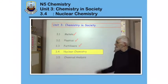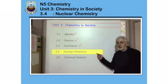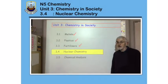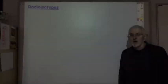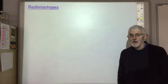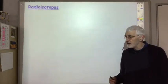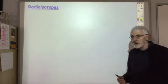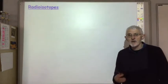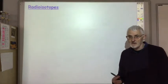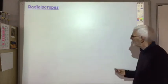In this lecture we're going to look at section 3.4 which deals with nuclear chemistry. I'll start with considering what is meant by the term radioisotope. You should be familiar with the term isotope from unit 1.